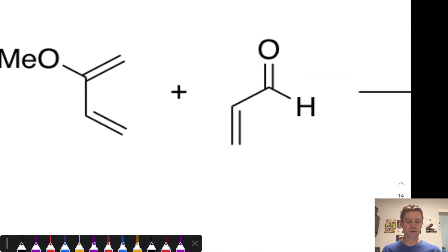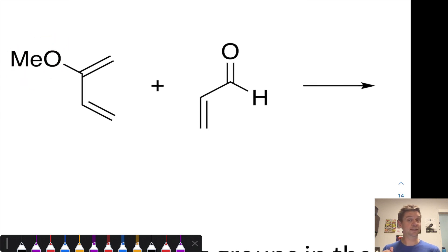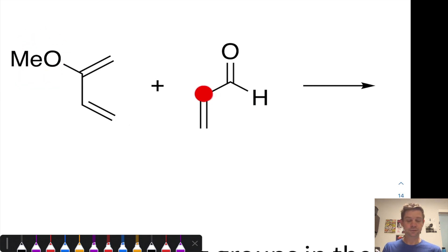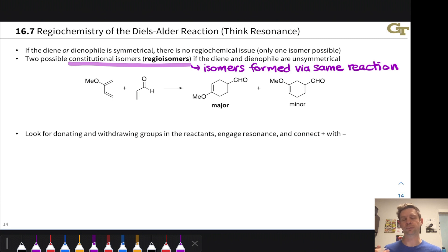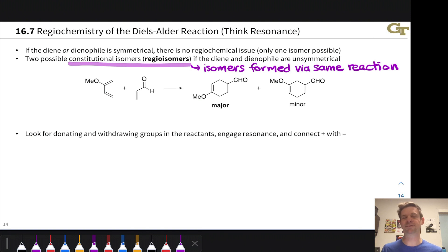To see this, let's zero in on this Diels-Alder reaction between a methoxy-substituted diene and a formyl-substituted dienophile. We've got the conditions for a regiochemical or site selectivity issue here. This end of the diene is not equivalent to the other end, thanks to the methoxy group. And one carbon of the dienophile is not equivalent to the other, thanks to the formyl group. So there are actually two different ways to link up this diene and dienophile via a 4+2 reaction. These two possible constitutional isomers are called regioisomers.